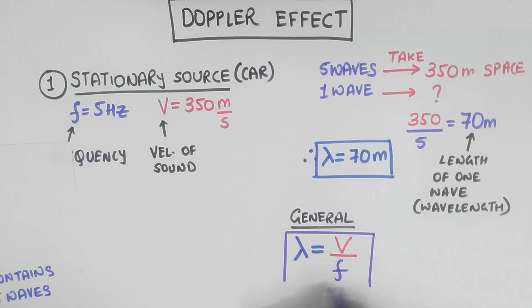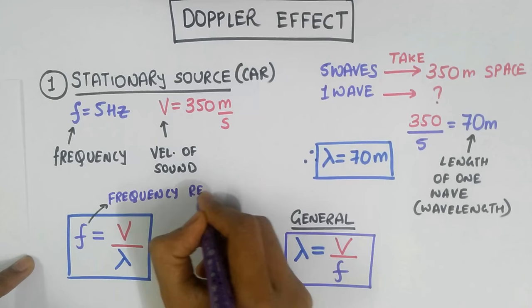Or F equals V divided by lambda. To calculate the frequency registered by any listener, we will always use this formula, F equals V divided by lambda.